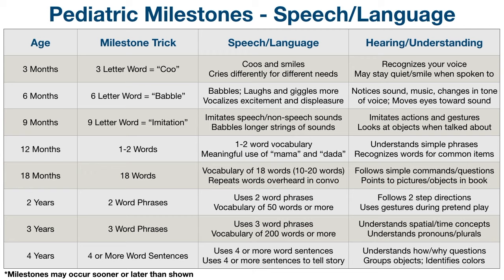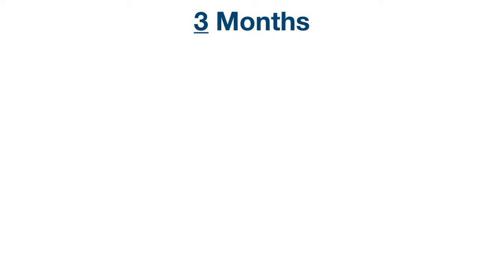There's also a previous Easy Med video on the pediatric milestones for gross motor development. I'm going to link that milestone video along with this table down below in the description, so make sure to check them out. The first major milestone occurs at three months.